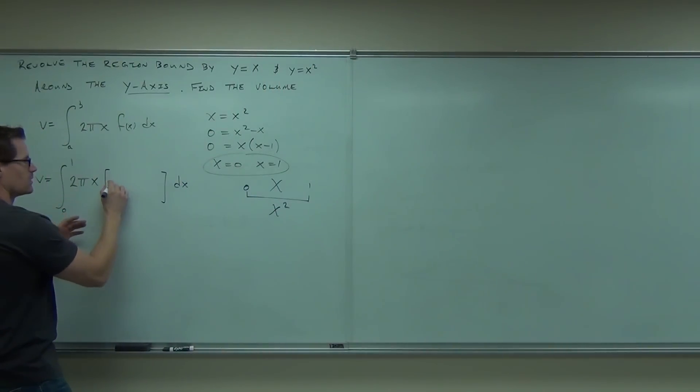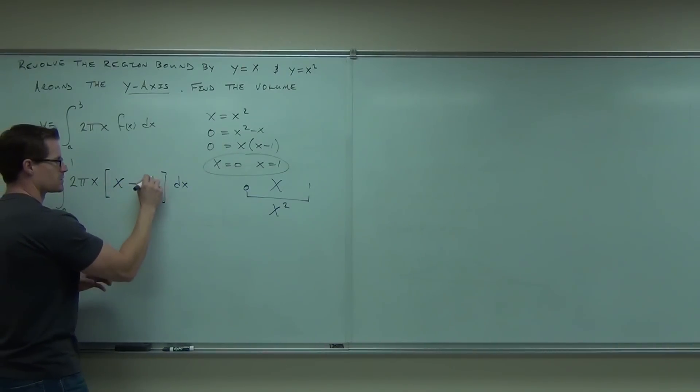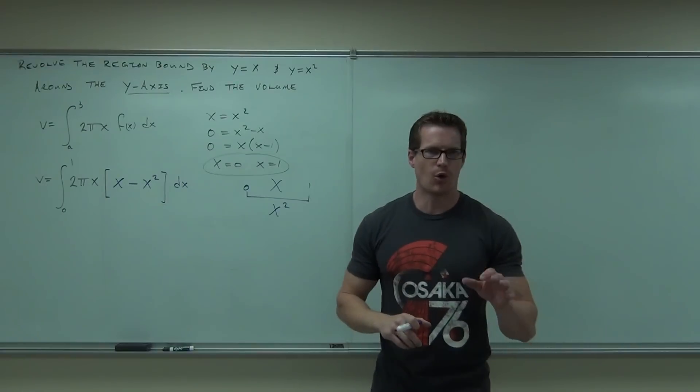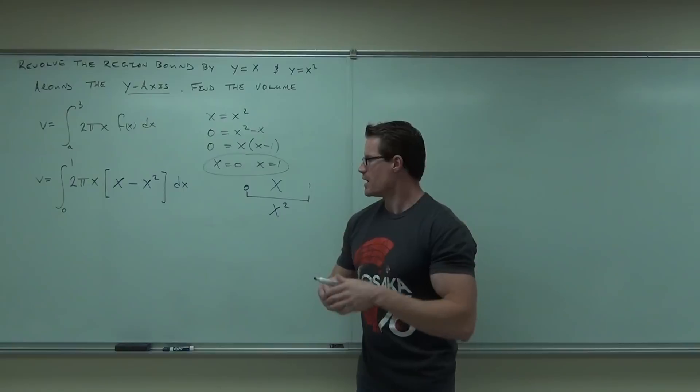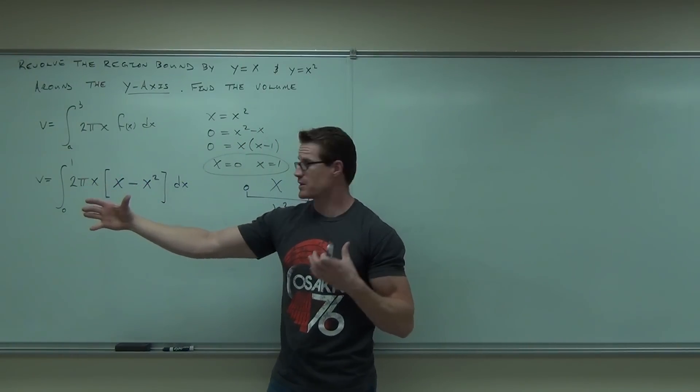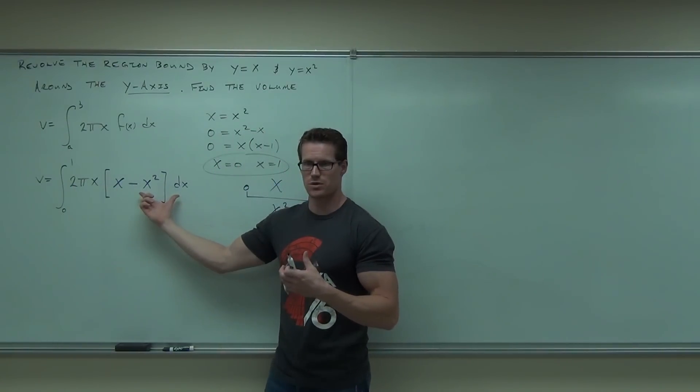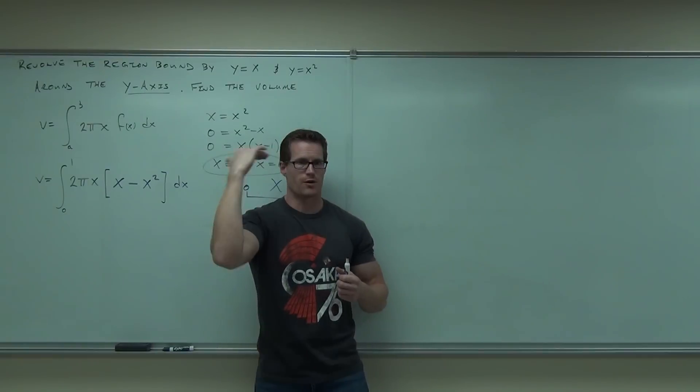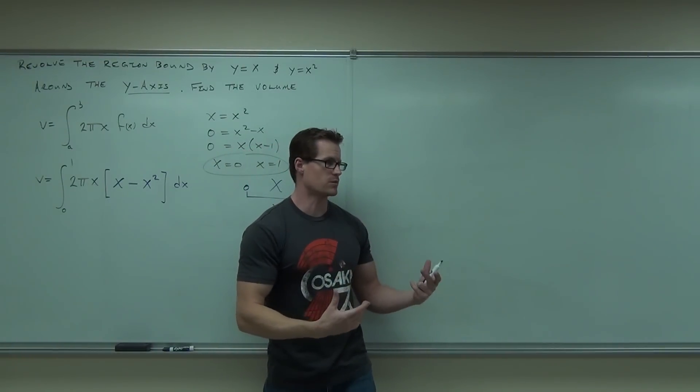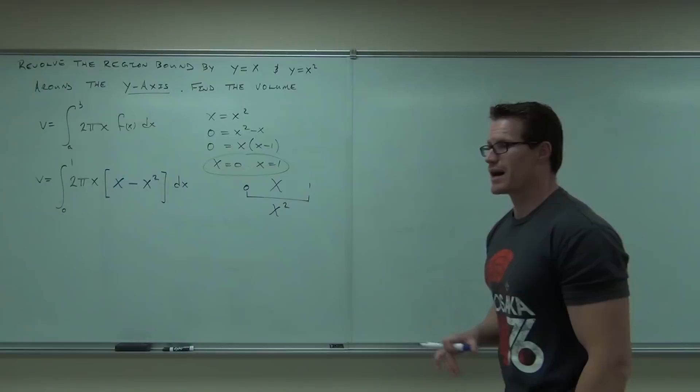When we plug this stuff in, f(x) is not just one function anymore. It's the top one minus the bottom one. When you think about that, I hope it makes sense to you. If I distributed this and I broke those integrals up, what it would have is the volume underneath this minus the volume underneath this. Or in other words, the volume of the top one revolved around the y minus the volume of the bottom one revolved around the y. That gives us the remaining volume. It's a very similar idea to the area between two curves.